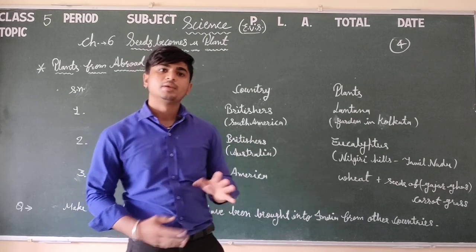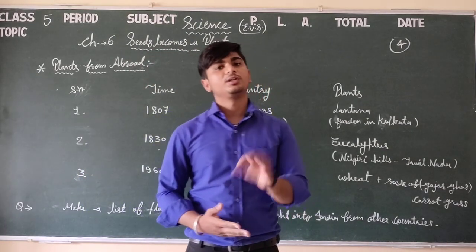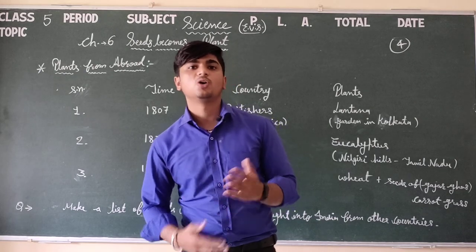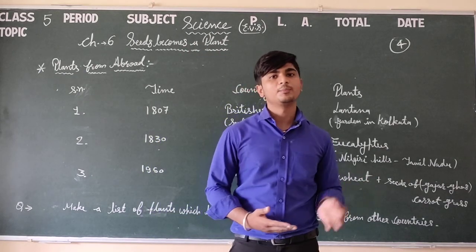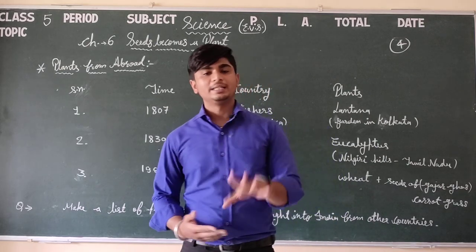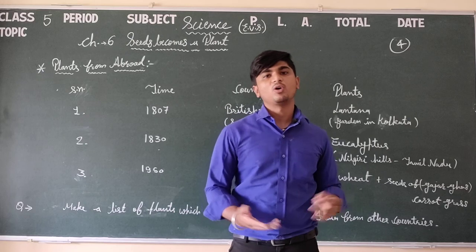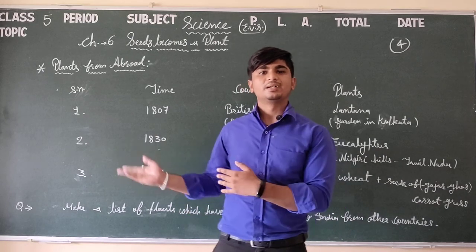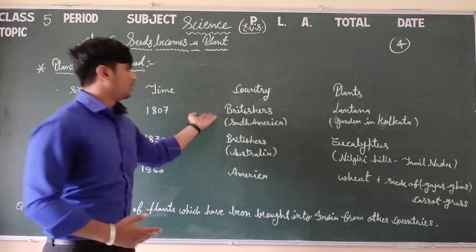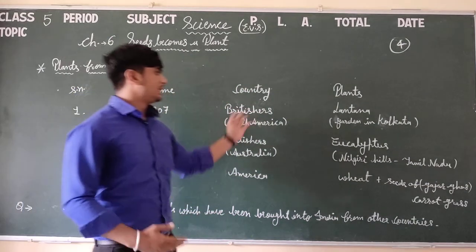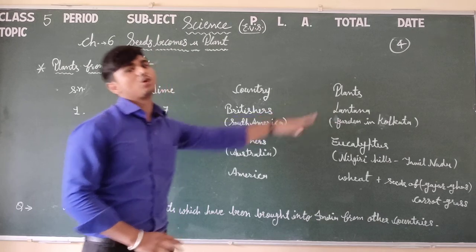So in India we have seen different kinds of plants from different countries introduced into agriculture. A short recap: from China we had tea, from Africa we had coffee, from Europe we had a species, and from South America the Britishers brought the Lantana flower, which was planted in Kolkata.